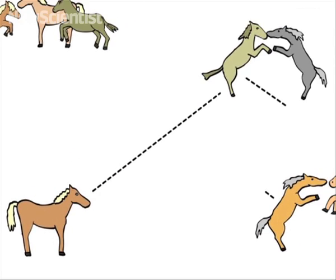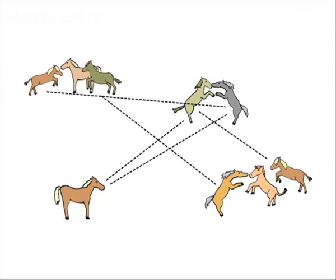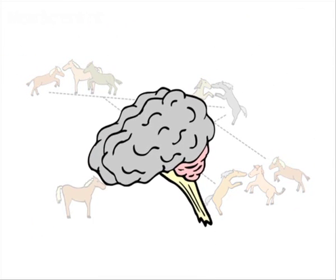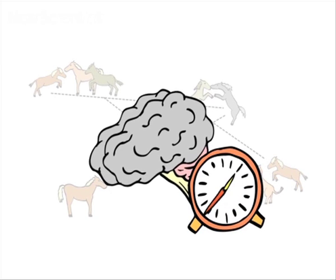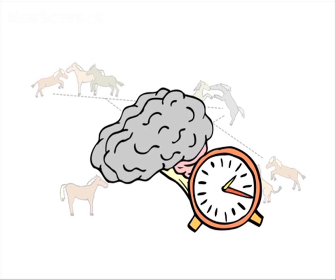And keeping track of all these different relationships isn't simple. You have to know how your actions will affect others in the group. And that takes a big brain. It also takes a lot of time to maintain those relationships. And in the wild, that time is usually spent grooming.